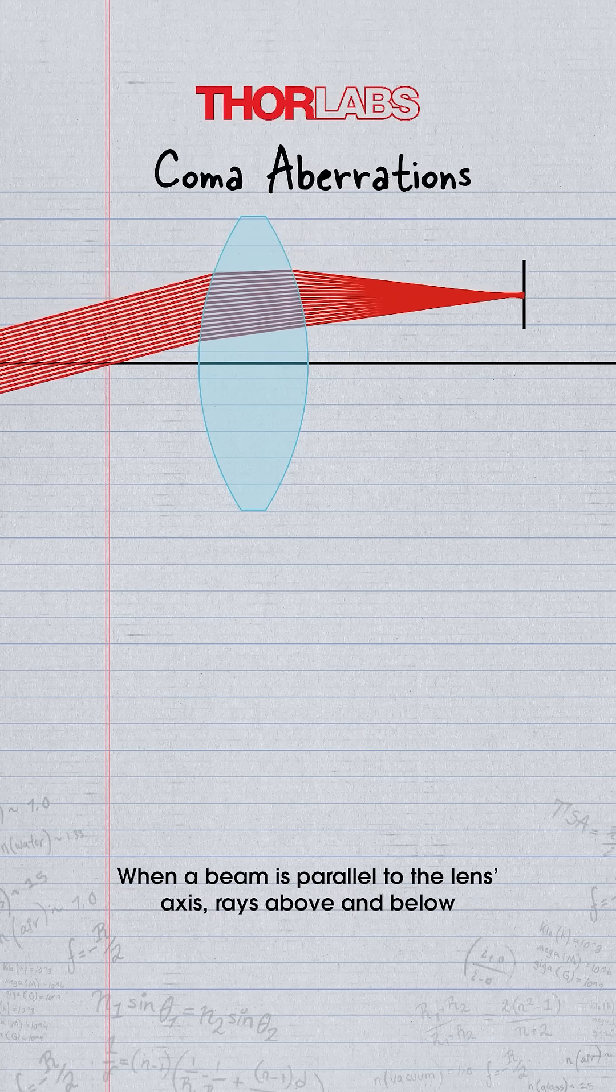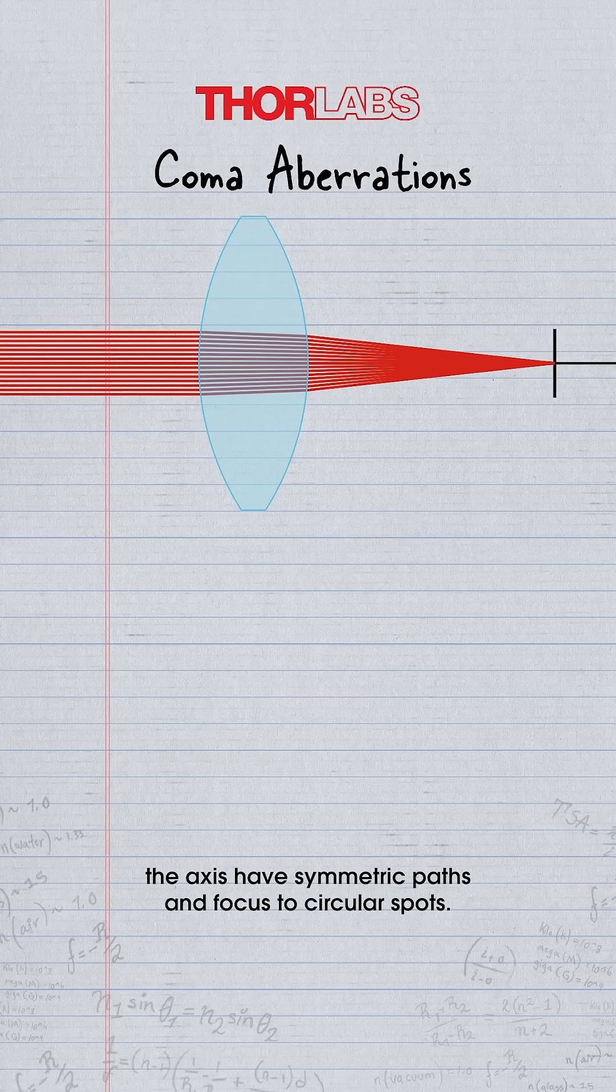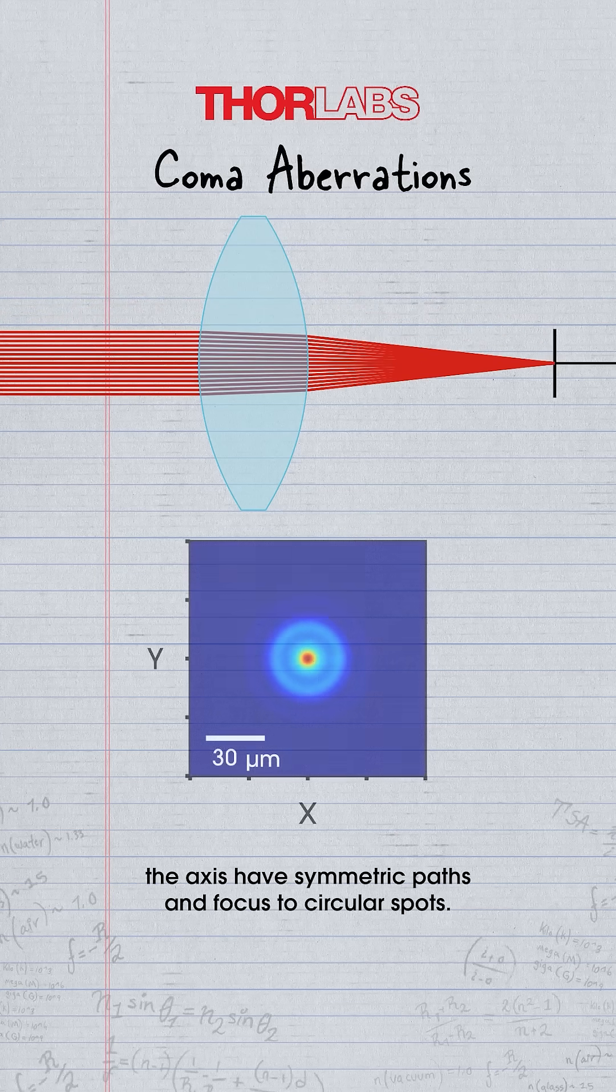When a beam is parallel to the lens axis, rays above and below the axis have symmetric paths and focus to circular spots.